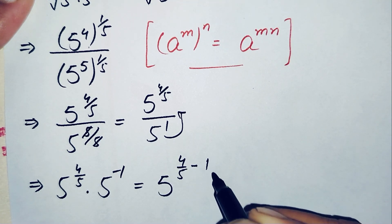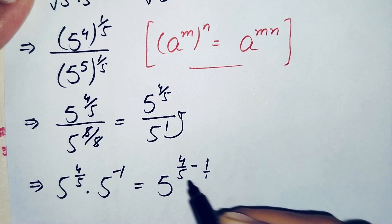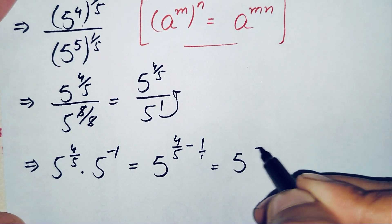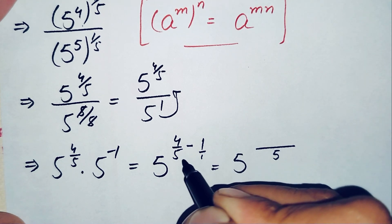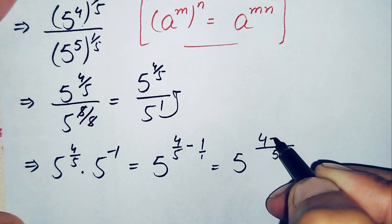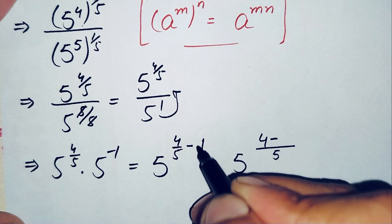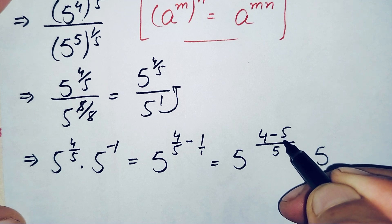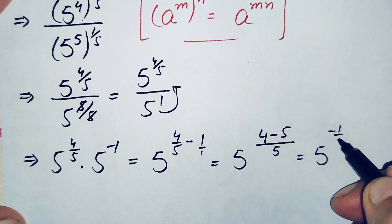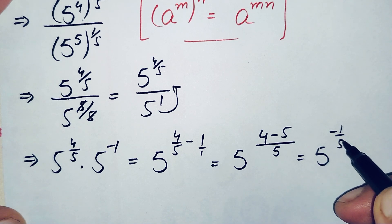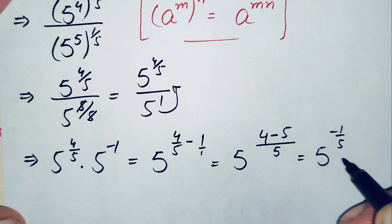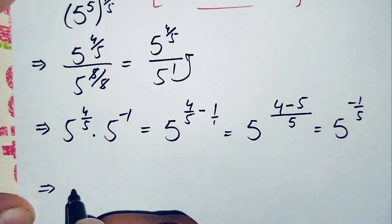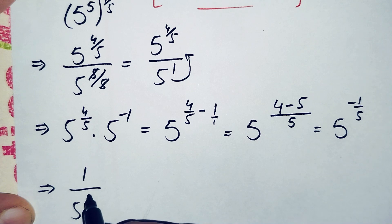Adding the powers: 4 over 5 minus 1. Taking the LCM of 5 and 1, which is 5, we get 4 over 5 minus 5 over 5, giving us negative 1 over 5. So this becomes 5 raised to power negative 1 over 5. Since the power is negative, we move 5 raised to power negative 1 over 5 to the denominator, making the power positive. This gives us 1 divided by 5 raised to power 1 over 5, which is our answer in fraction form.